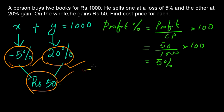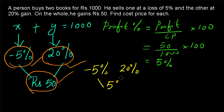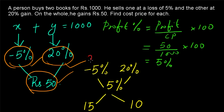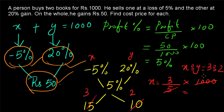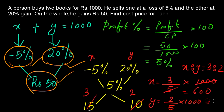Now we can use the rule of allegation. −5% (loss) and 20% (gain) combined give a gain of 5%. The difference between 20 and 5 is 15, and the difference between −5 and 5 is 10. So X to Y = 15 to 10 = 3 to 2. Therefore, X = 3/5 × 1000 = Rs. 600, and Y = 2/5 × 1000 = Rs. 400. Rs. 600 and Rs. 400 are the cost prices of each book. Thank you for watching.